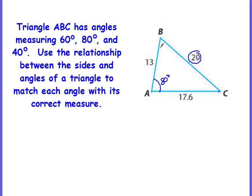The smallest side is side AB. The angle opposite it is the vertex that side AB does not touch — it does not touch angle C. So angle C is opposite the 13, making it the smallest angle at 40 degrees. That means the middle side, 17.6, is opposite angle B. So angle B is the middle angle at 60 degrees.